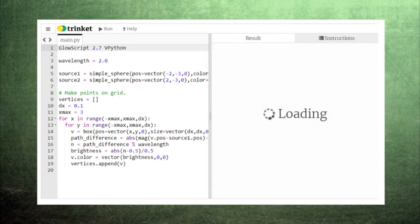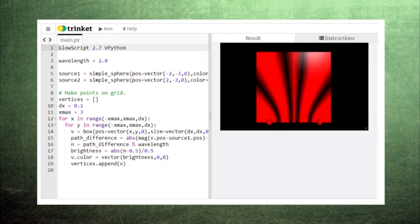The result shows us a stunning visual of where constructive and destructive interference occurs. We call this effect diffraction, and we refer to these patterns as fringes.